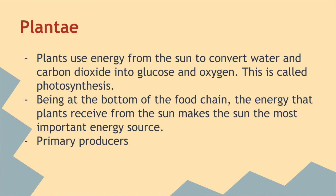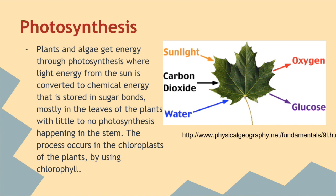Plants use energy from the sun to convert water and carbon dioxide into glucose and oxygen. This is called photosynthesis. Being at the bottom of the food chain, the energy that plants receive from the sun makes the sun the most important energy source. Plants are known as primary producers in the energy cycle. Plants and algae get energy through photosynthesis, where light energy from the sun is converted to chemical energy stored in sugar bonds. Photosynthesis mostly occurs in the leaves of plants, with little to no photosynthesis happening in the stem. The process occurs in the chloroplasts of the plants by using chlorophyll.